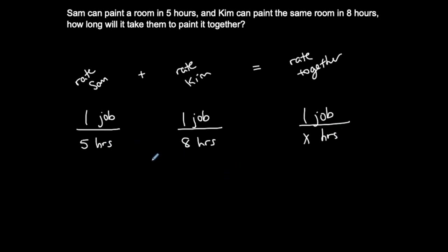Because if you think about it, they should technically do it a little less than eight hours and a little faster than, a little longer than five hours, a little less than eight hours because they're working together. But the rate at which Sam does her job plus the rate at which Kim does the job should equal the rate at which they do it together.